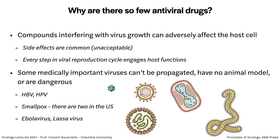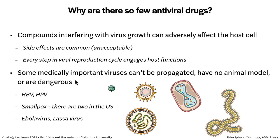So why are there so few antivirals? First, compounds that work by inhibiting virus processes can affect the host cell because some proteins are similar in the virus and the host — such as proteases and polymerases — causing unacceptable side effects. Every step in viral reproduction requires some host function, making it hard to separate them. For other viruses we can't grow them easily — hepatitis B and human papillomaviruses are difficult. Some dangerous viruses lack an animal model; smallpox, for example, has no usable animal model.